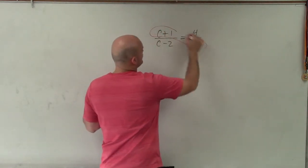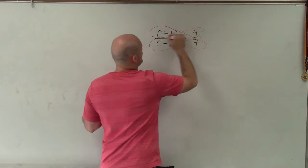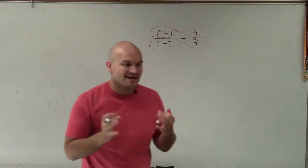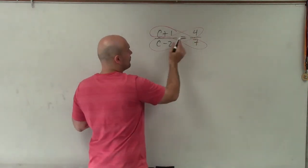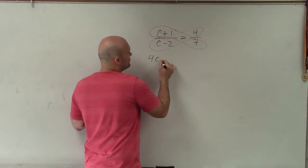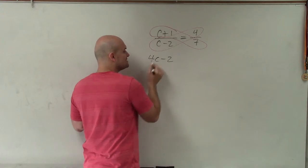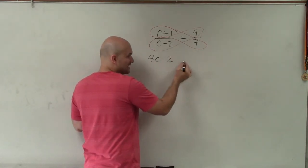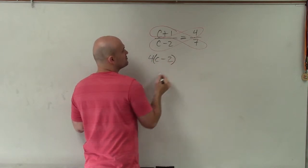So if we were going to apply the cross product here, like a circle around, all right? And again, the use of parentheses I cannot emphasize enough. So this is 4 times c minus 2. Do not write 4 times c minus 2 like this, because this says 4 times c, then minus 2.